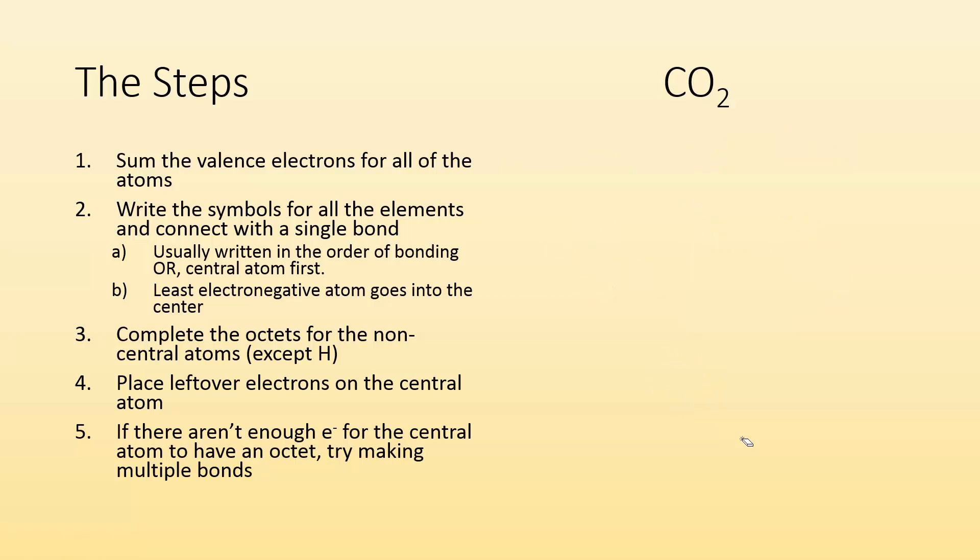So let's try it again for CO2. Carbon has four valence electrons and we have two oxygens each with six valence electrons. So I end up with a total of 16 valence electrons. Step one, check. Step two, write the symbols for all the elements and connect with a single bond. Carbon is the less electronegative element. So I put in the middle, we connect it to the two oxygens.